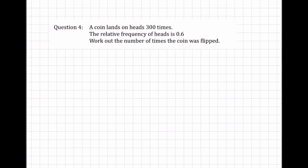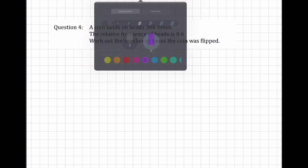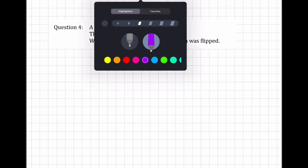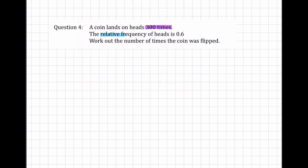Last example. A coin lands on heads 300 times, and the relative frequency of heads is 0.6. The question is asking us to work out the number of times the coin was flipped. I don't know how many times the coin was flipped, which means I'm going to replace the number of times with a variable — X or any letter.